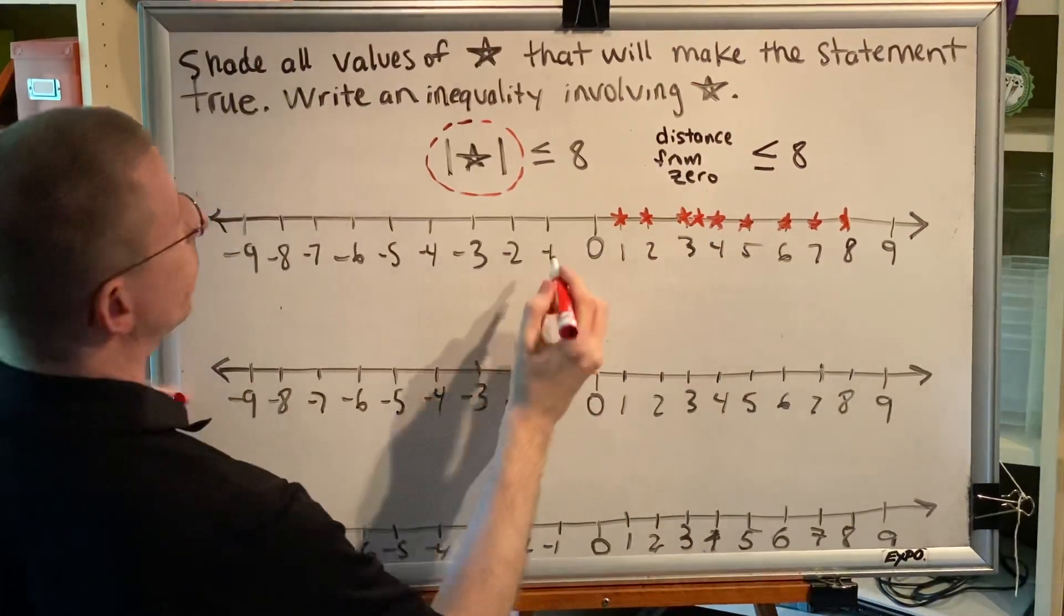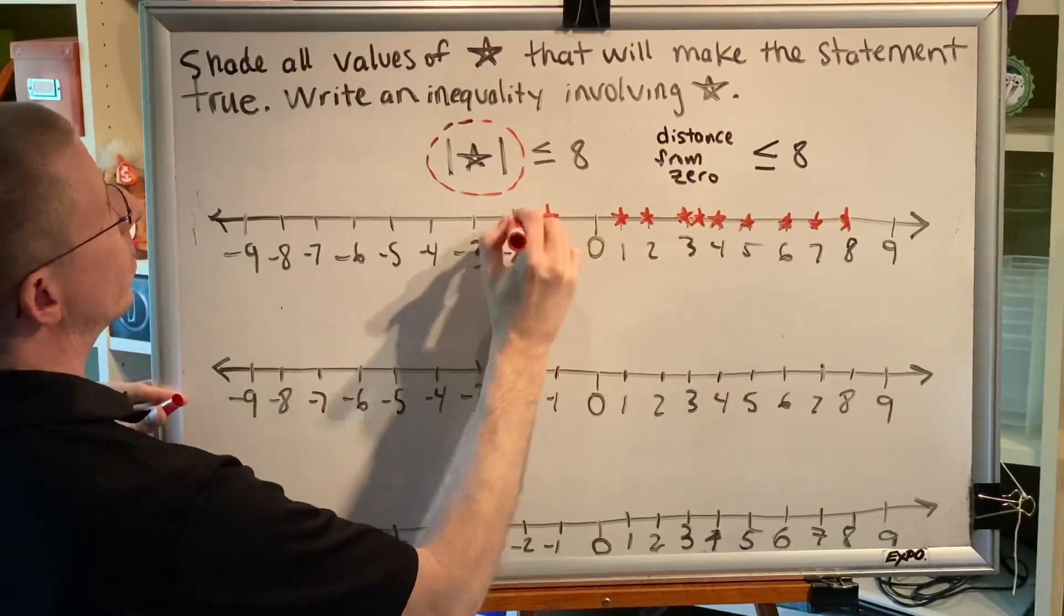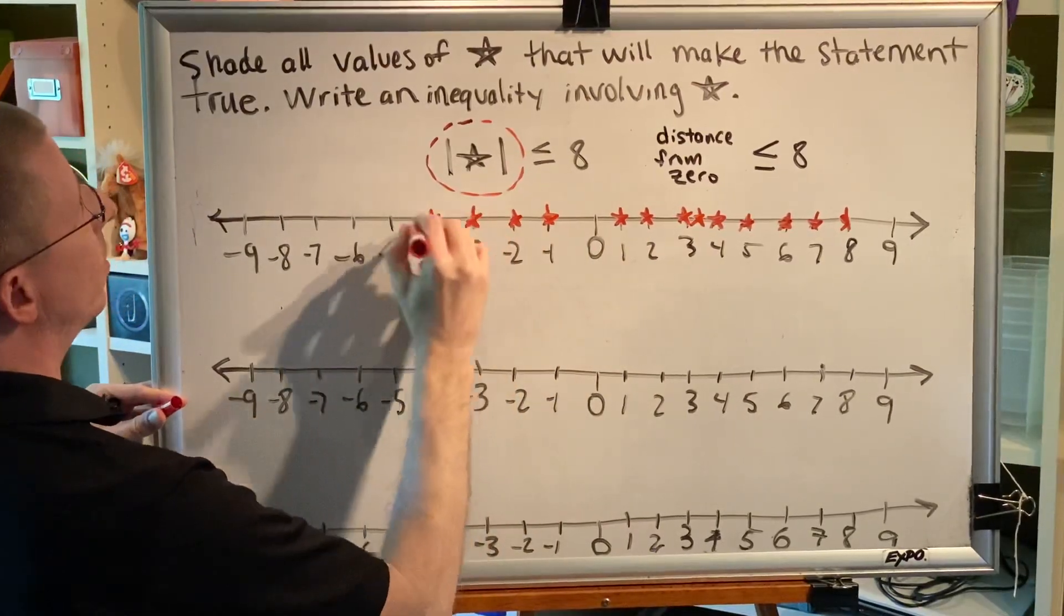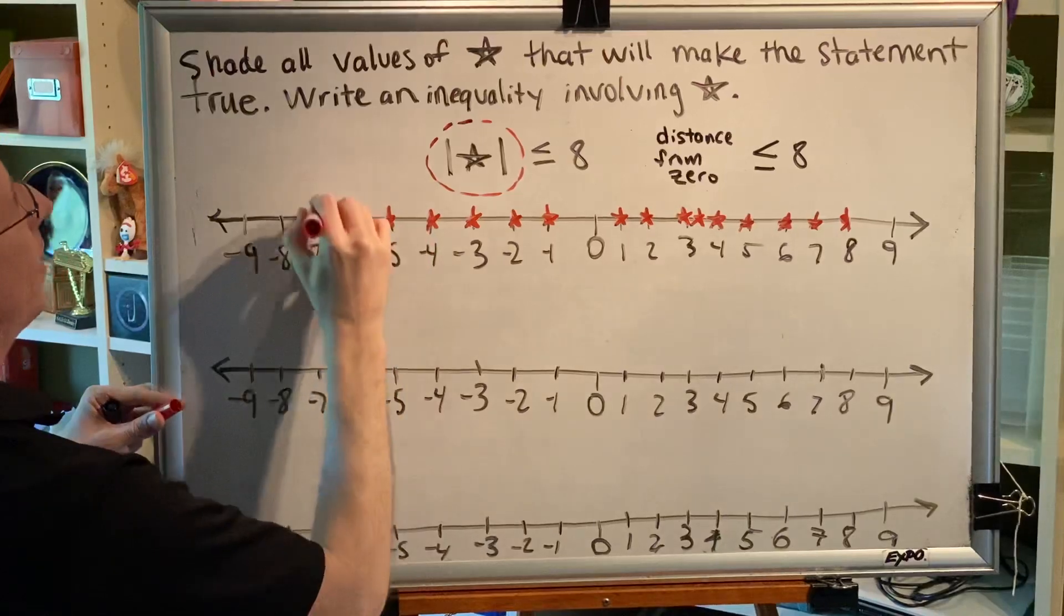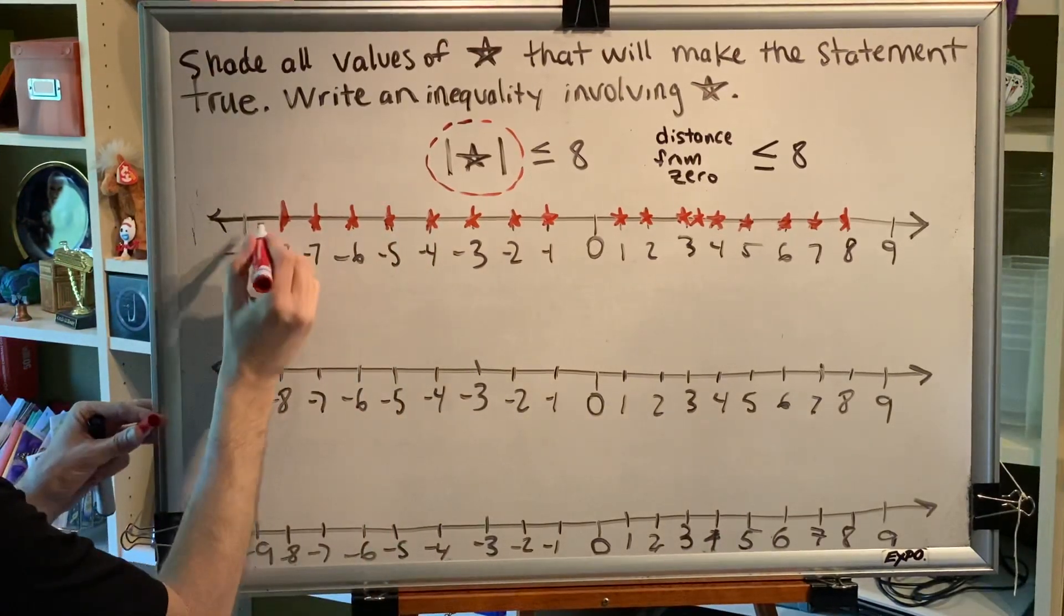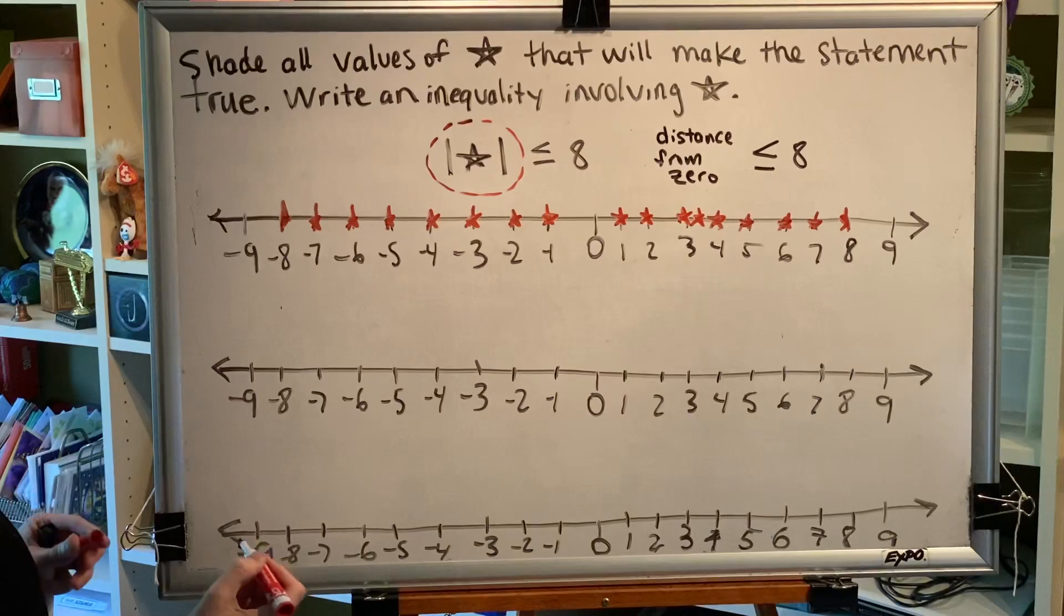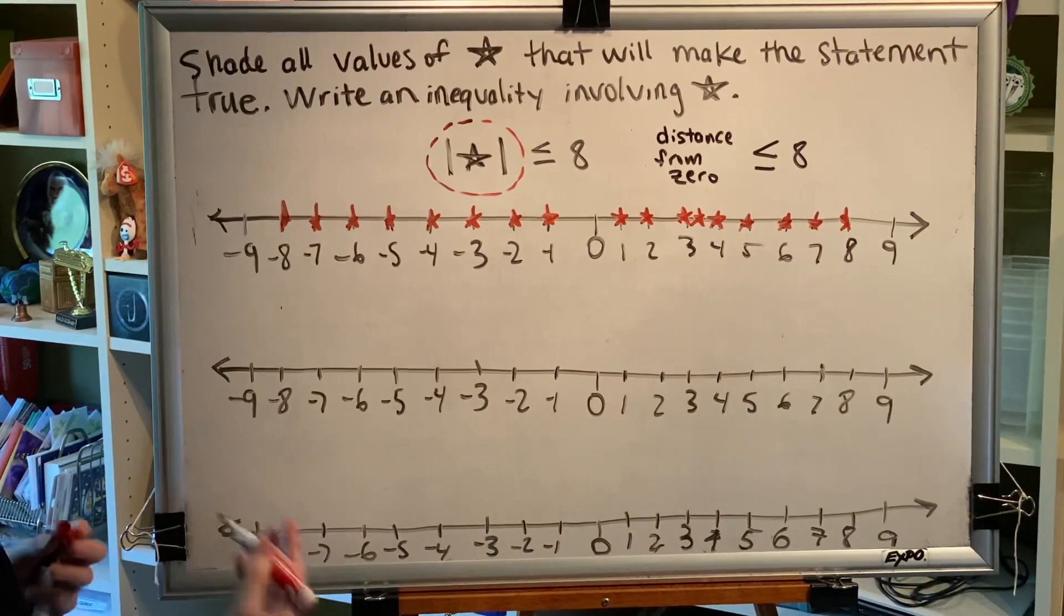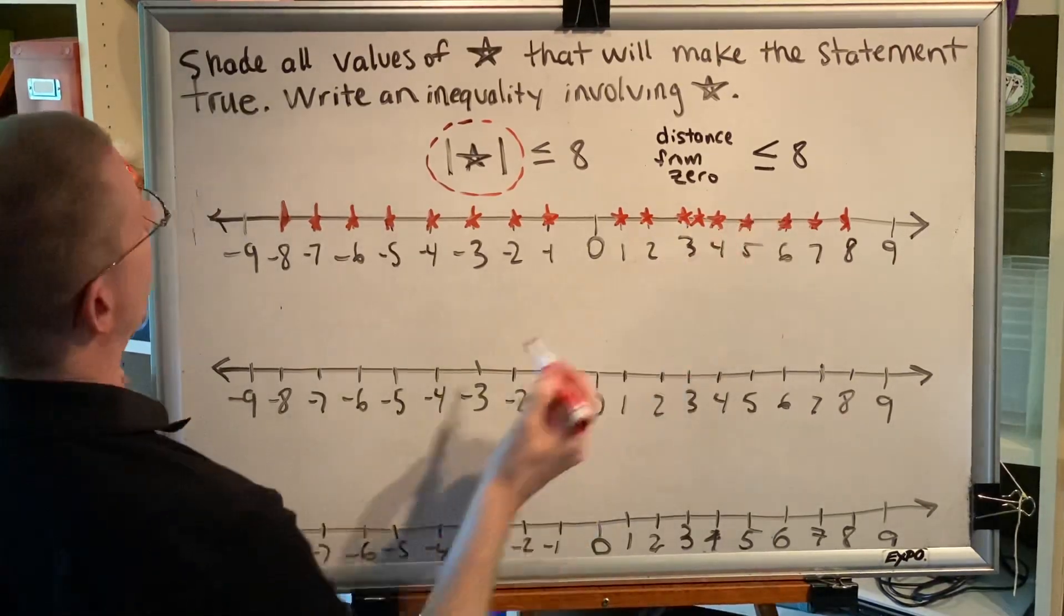How about the numbers on the other side? Yes. But the moment I get beyond 8, the answer becomes no, because then the distance would be more than 8 and I want less than or equal to.